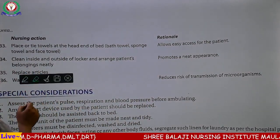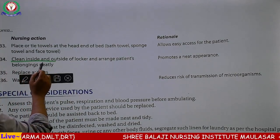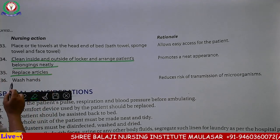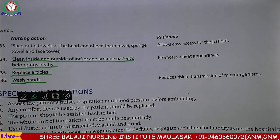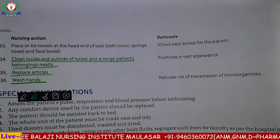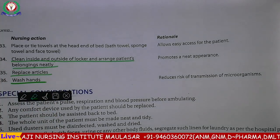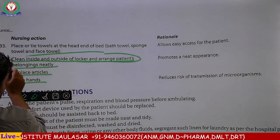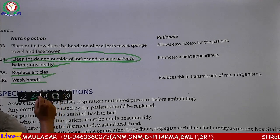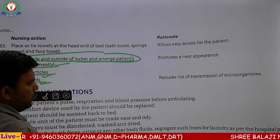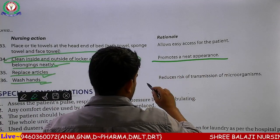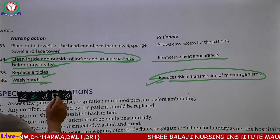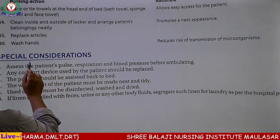Clean inside and outside of locker — arrangement the patient's belongings neatly — place the articles and wash। Locker के अंदर बाहर साफ करें और मरीज के सामान को साफ-सुथरे तरीके से व्यवस्थित रख दें। Replace articles, hand wash कर लें। To promote neat appearance और reduce the risk of transmission of microorganism से बचने के लिए।